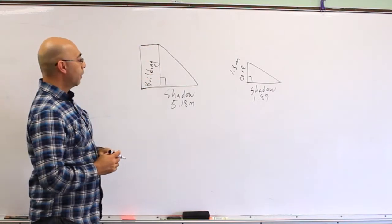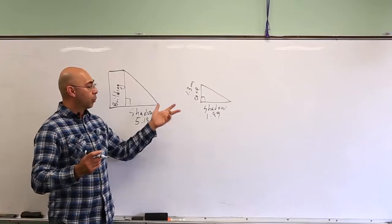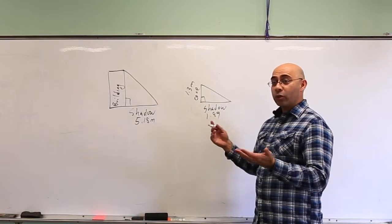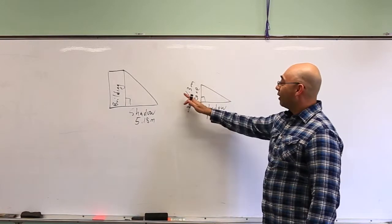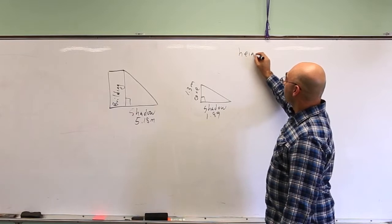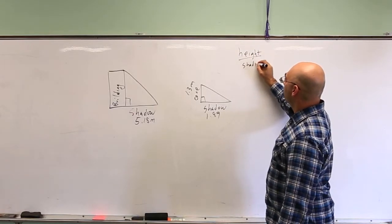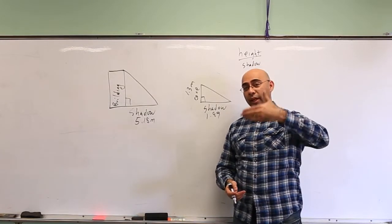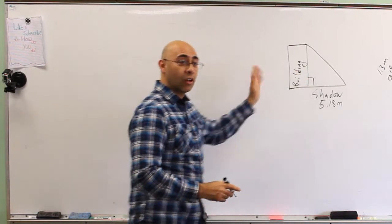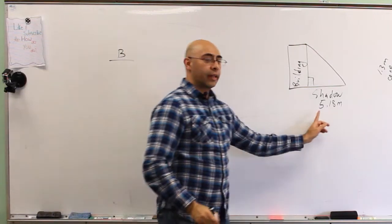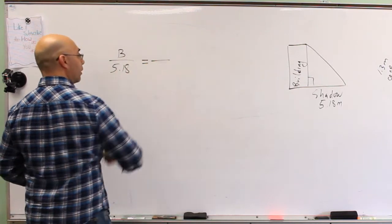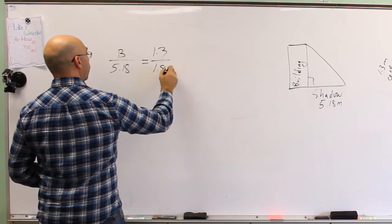We can do this multiple ways. One way is the classic method of using proportions or fractions. How you set it up is up to you, but the key idea is you have to remain consistent. I'm going to look at the height of the object divided by the length of the shadow. So when I write my proportion, height goes on top and the length of the shadow goes on the bottom. The height of the building — I'll call that B — over the shadow length of 5.18, equals 1.3 divided by 1.89.